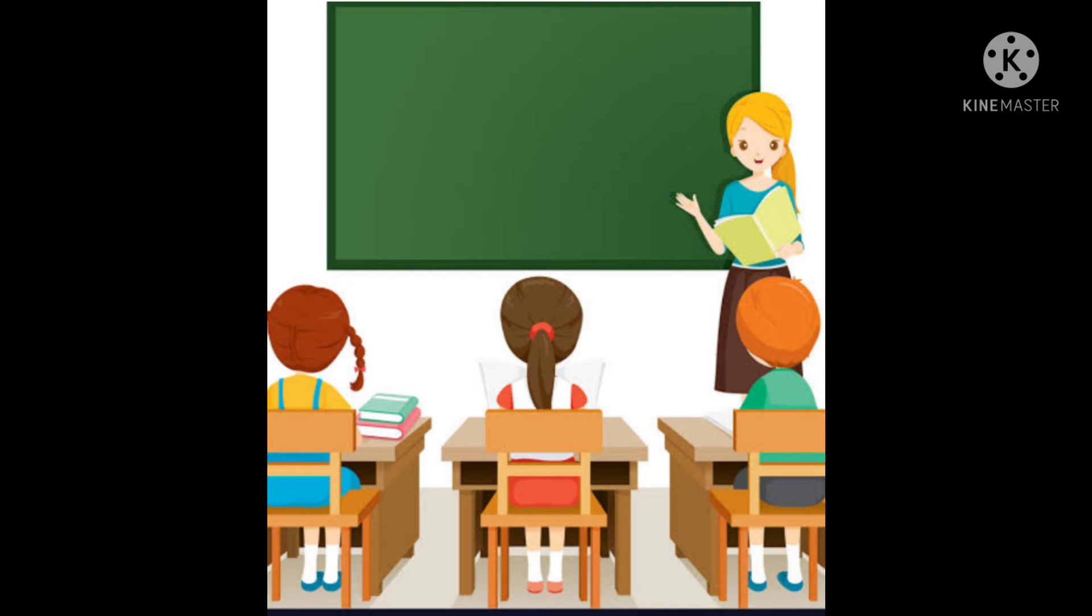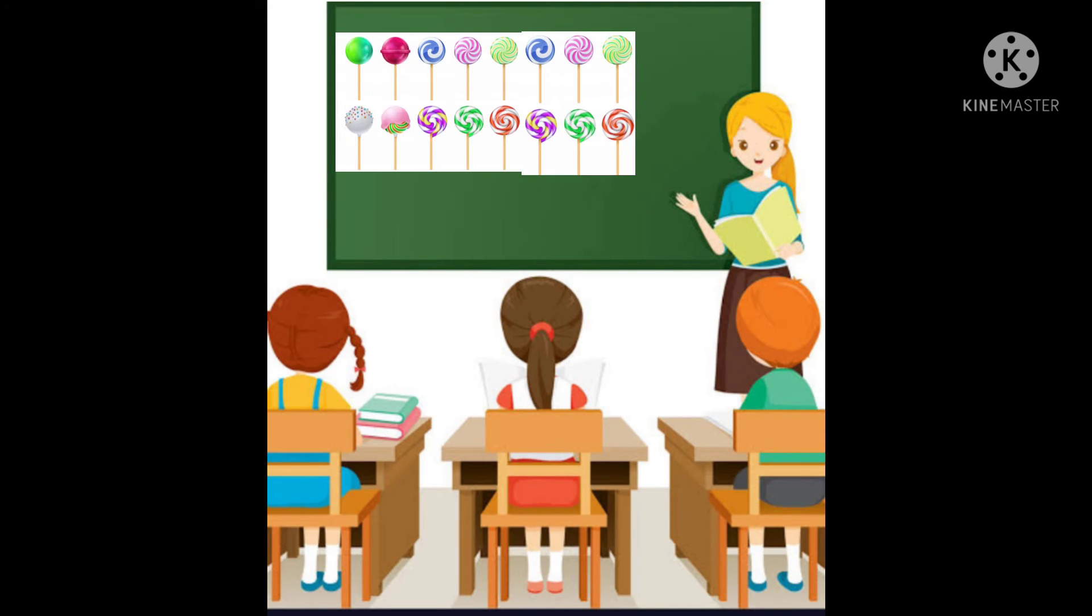Children, look at the next example. Here we have 16 lollipops. Here the question is 16 minus 3. So, we want to cross out 3 lollipops. 1, 2, 3.